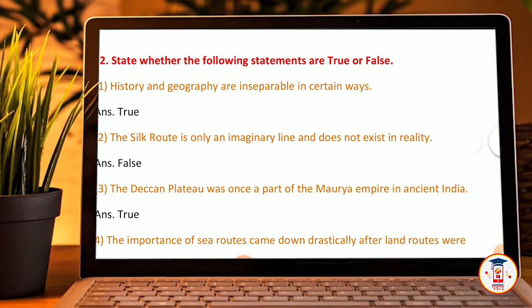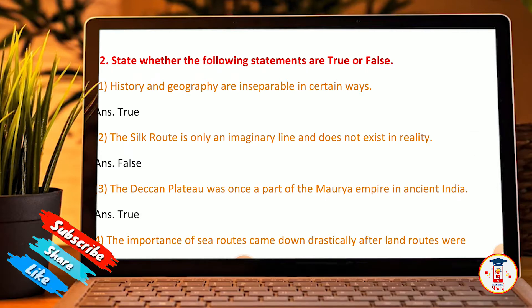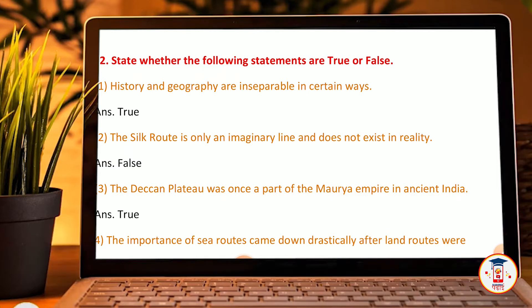State whether the following statements are true or false. History and geography are inseparable in a certain way — True. The Silk Route is an only imaginary line that does not exist in reality — False.